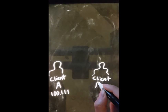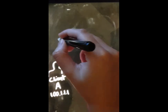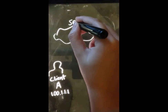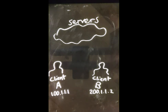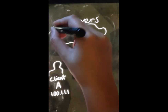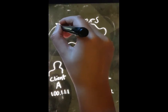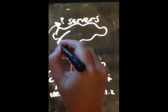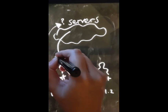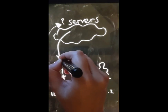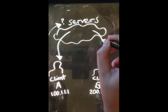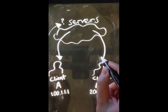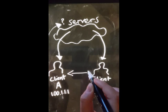Now UDP hole punching can be illustrated as the different terminologies have been explained. We assume that we have a rendezvous server S, client A and client B. A would like to create a connection with B and asks S for B's information. S will inform A with the information of B, meaning the public and private IP addresses and port numbers. At the same time, S will inform B about A's information along with the connection request from A.